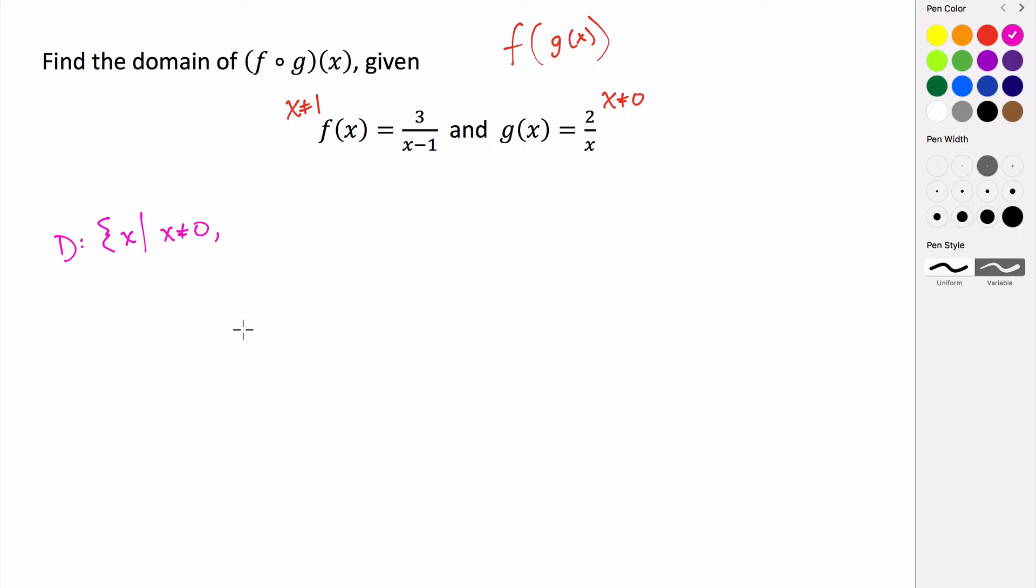But we need to figure out, are there any other domain restrictions? Now we know that our function f is not allowed to equal 1. This isn't really x cannot be 1, it's whatever the input is here. So in this case, we're evaluating f at g of x. f is being evaluated at g of x.